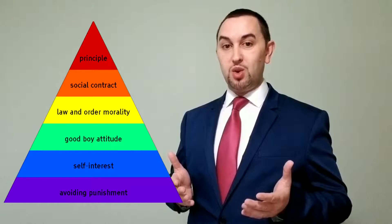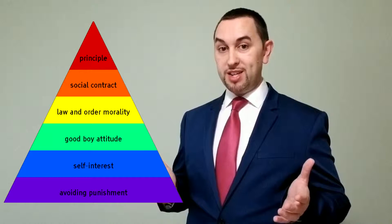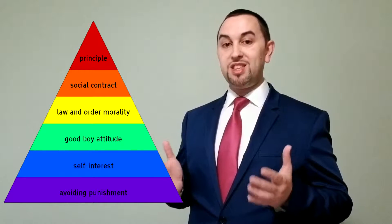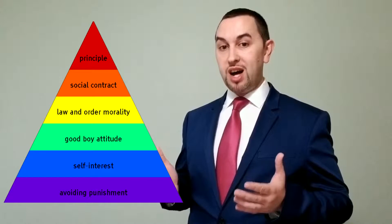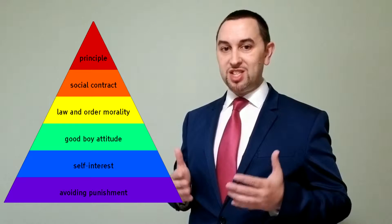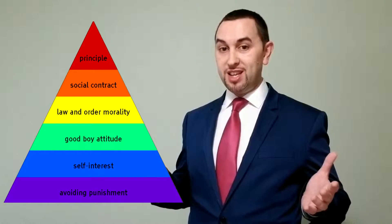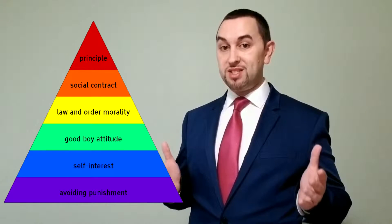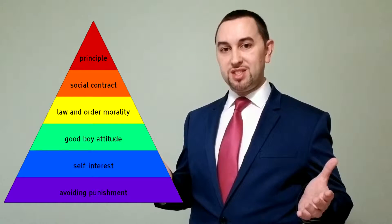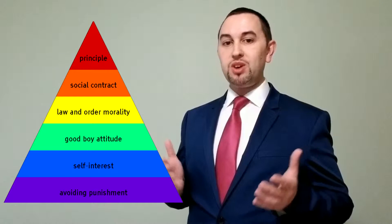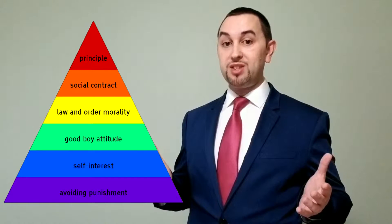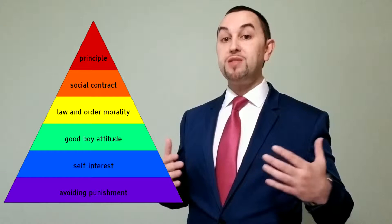Level three is called post-conventional morality. Stages five and six are part of this level. Stage five is about the social contract and individual rights. At this stage, you see that just because society is functioning, it doesn't mean it's the best society. So you ask yourself: what makes a society good? You conclude that we should have a social contract that we enter into which should benefit the majority.